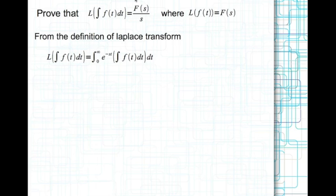The way we prove that is by starting with the fundamental definition of Laplace transforms. The Laplace transform of the integral of f(t) dt is the integral from 0 to infinity of e to the power of minus st times the integral of f(t) dt, dt. The inner integral is the function of t, and the outer integral is the Laplace transform.